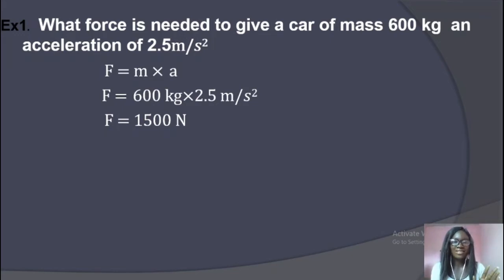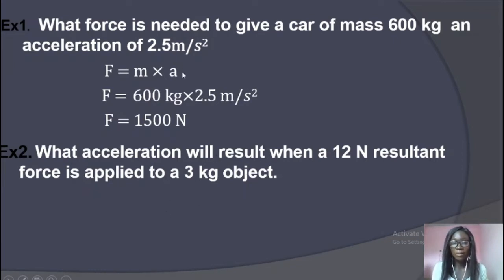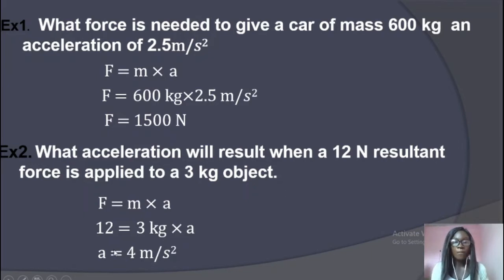Example two: What acceleration will result when a 12 Newton resultant force is applied to a 3 kg object? This time we are not looking for force, we are looking for acceleration. We have force = 12 N and mass = 3 kg. We find acceleration by saying force divided by mass: 12 divided by 3 gives us 4 meters per second squared, which is our acceleration.